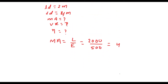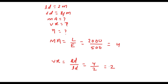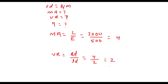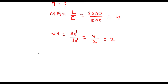Now we have to find the velocity ratio. Velocity ratio means effort distance divided by load distance. Effort distance is 4 and load distance is 2, so velocity ratio becomes 2. Now we have to find the efficiency, and we know that efficiency is given by MA divided by VR, multiplied by 100.